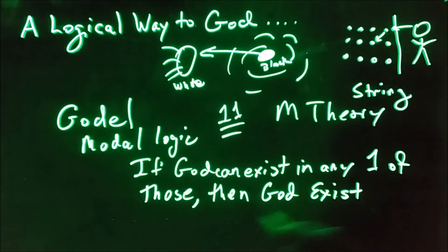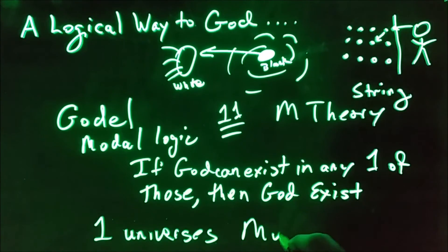If God exists in just one of those universes, what do they call them now? I think they're called multiverses. So if God exists in any one of them, by definition, he has to exist in all. And so that's basically an ontological proof. So bammo, God exists.